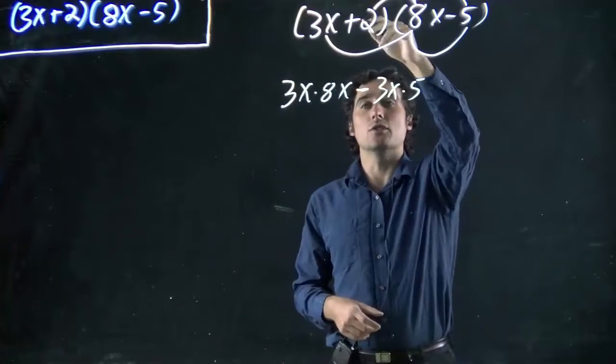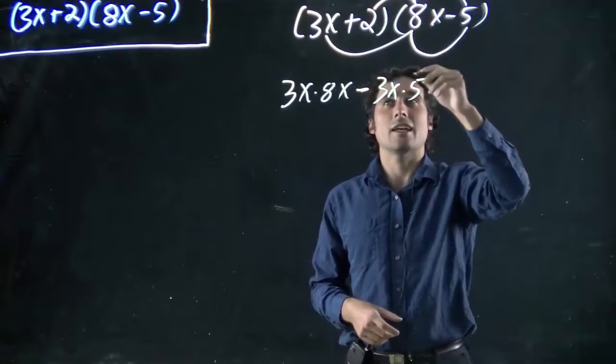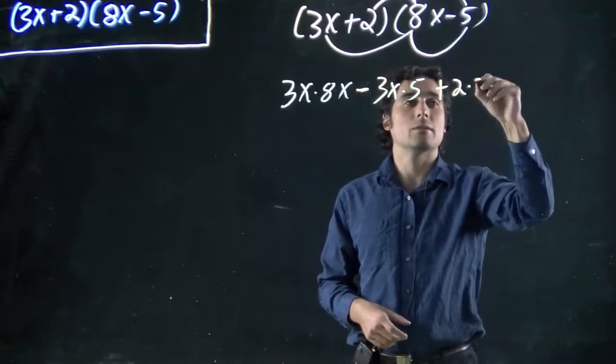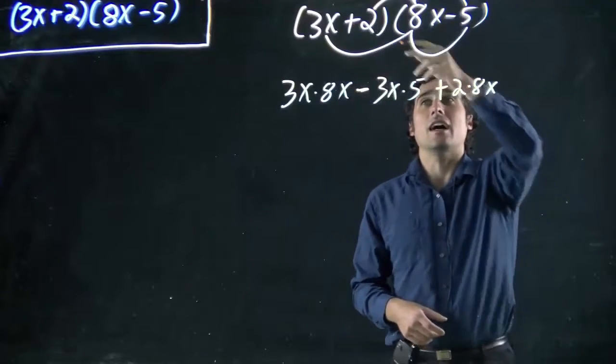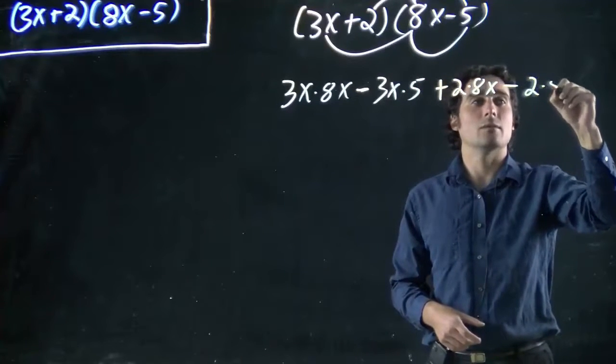Now we do the same thing for 2 that we just did for 3x. 2 times all these terms: 2 times 8x. And we got a plus in front of the 2, so 2 times 8x. And then 2 times minus 5. Well, a plus and a minus means a minus, so 2 times 5.